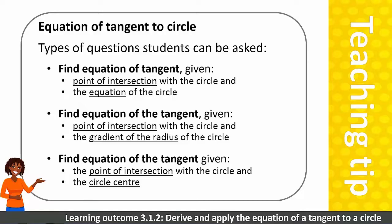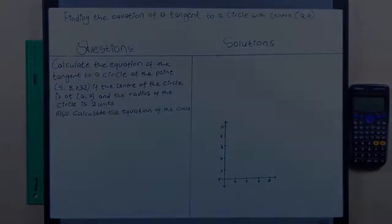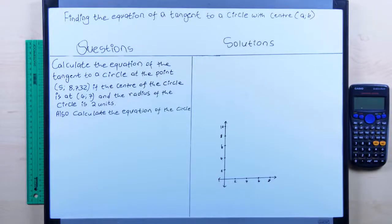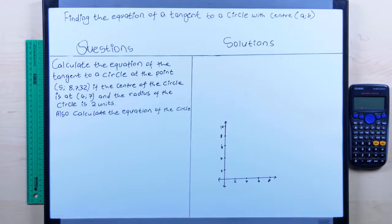Let's look at an example with a circle whose center is not at the origin. Calculate the equation of the tangent to a circle at the point (5, 8.732), given that the center of the circle is at (4, 7) and the radius is 2 units. Also calculate the equation of the circle.